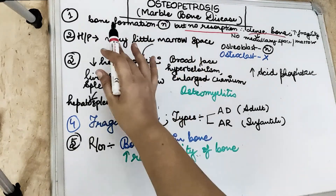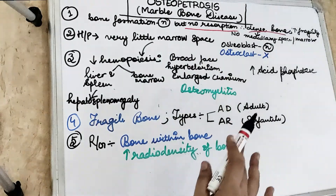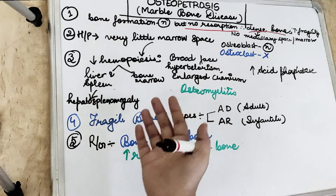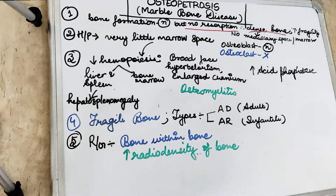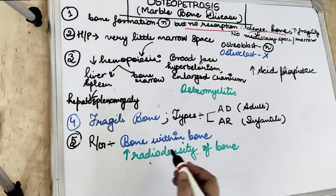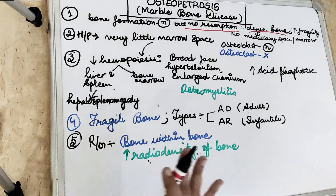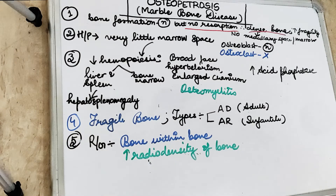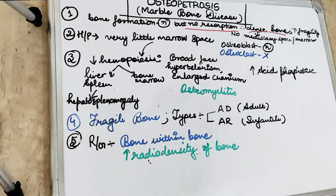In osteopetrosis, bone formation is normal but there is no resorption which takes place. When there is no resorption of the bone, that means the bone has become very dense. On radiograph, the bone has the same radio-density as that of teeth, so it appears very radio-opaque. There is also fragility of the bone — the bone becomes weak and more prone to fracture in case of osteopetrosis.